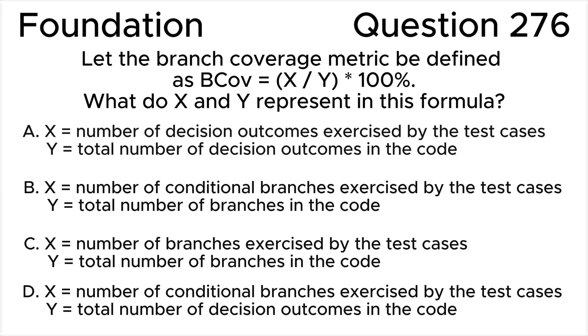ISTQB Foundation Level question 276: Let the branch coverage metric be defined as BCov equals X divided by Y multiplied by 100%. What do X and Y represent in this formula?